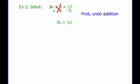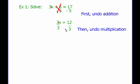Remember, anything we do to one side of an equation, we have to do to the other side of the equal sign. We have 3x equals 12 and we want to know what x is, so we need to get rid of this 3. Since I'm multiplying by 3, to get rid of that multiplication we divide both sides by 3. My 3's cancel and I just get x. On the other side I get 4. So my answer is x equals 4. All I did was cancel out what I see using inverse operations — first I undid my addition, then I undid my multiplication. We just worked the order of operations backwards.